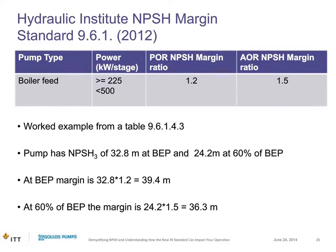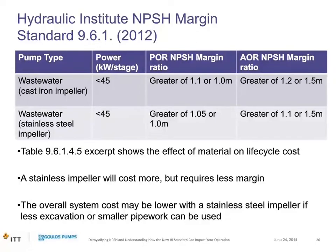Another example: a boiler feed pump with 225 to less than 500 kW per stage. The preferred operating range margin is simply 1.2 — no alternative option given; it is 20% more. The allowable operating range margin is 1.5. With NPSH-3 of 32.8 meters at BEP and 24.2 meters at 60% BEP: at BEP (preferred range), required NPSHA is 32.8 × 1.2 = 39.4 meters. At 60% BEP (outside preferred range, in allowable range), required NPSHA is 24.2 × 1.5 = 36 meters.